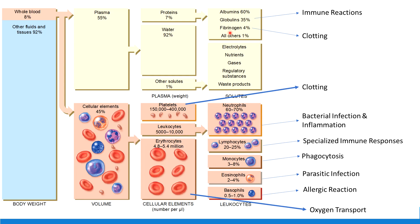In addition to using the fibrin protein for blood clotting, we also use platelets in the process of blood clotting. Platelets circulate around in the bloodstream and are the primary cell involved in blood clotting. Remember that they're not technically full cells — they develop when we split up those big cells called megakaryocytes into lots of little pieces. Platelets are the smallest of the formed elements.